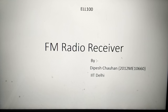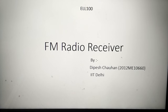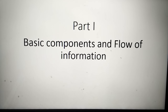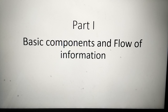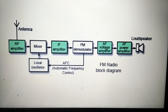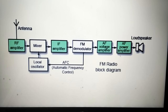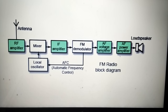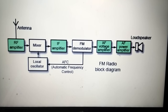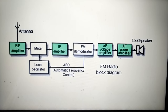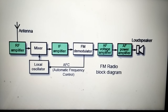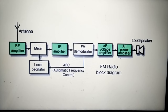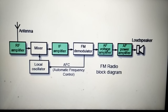Hello friends, myself Dipesh Chauhan and I am making this video of my project on FM radio receiver. The first part of this project is to explain the basic components using a block diagram and to show the flow of information. The FM radio receiver basically has an RF amplifier, a mixer, an IF amplifier, a demodulator, a voltage amplifier, and a power amplifier connected to the loudspeaker. The feedback from an FM demodulator is given to the local oscillator so as to give two inputs to the mixer, so that we can select a particular frequency and filter out the rest.